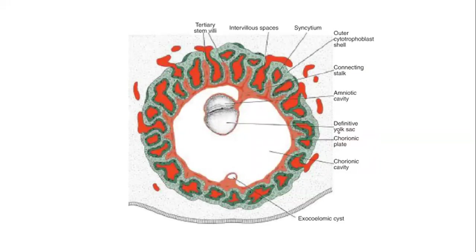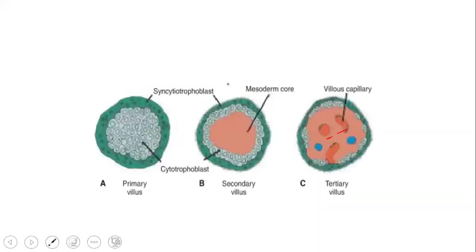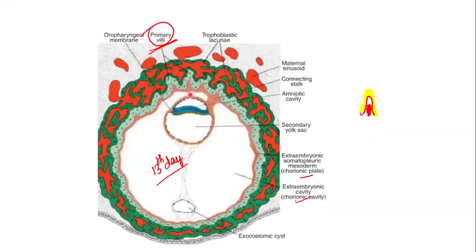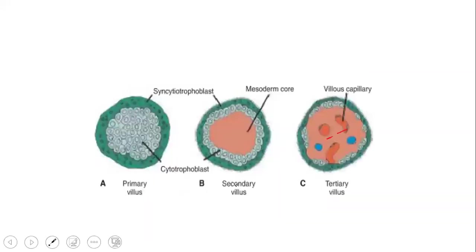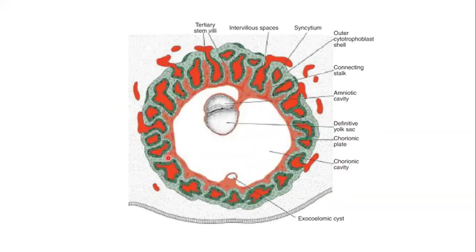This picture shows the intervillous spaces — the lacunae filled with sinusoidal blood — and the chorionic plate. As time progresses, blood vessels become appreciable in the chorionic plate. The intervillous spaces are well developed and communicate with maternal sinusoidal blood, while vessels begin to appear in the chorionic plate.